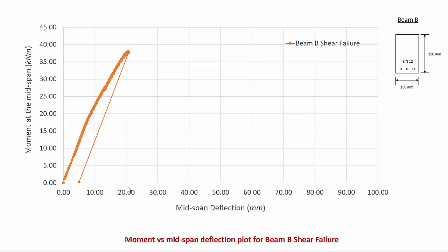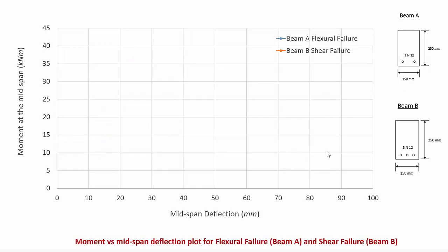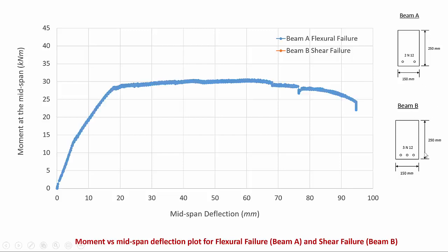We would like to avoid this kind of failure in real structures. Comparing the moment-deflection curves for beam A, which failed in flexure, and beam B, which failed in shear, we can see a clear distinction. Beam A yields at 28 kilonewton meters with a large yield plateau, while beam B reached a maximum moment capacity of around 38 kilonewton meters before failing very abruptly and suddenly with no yielding.